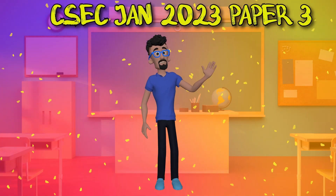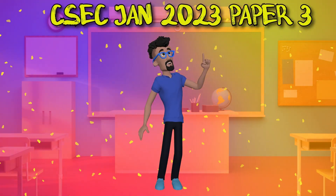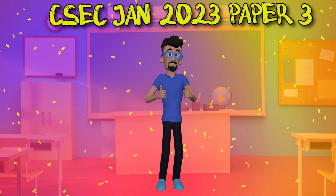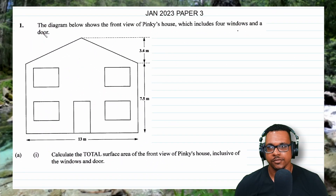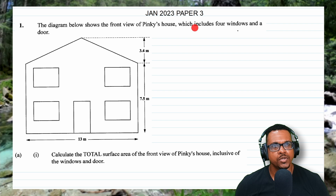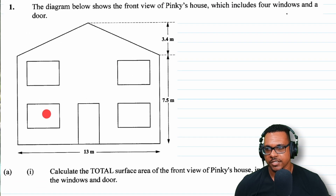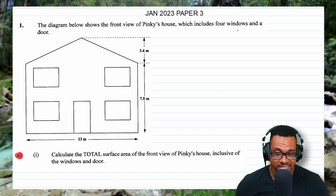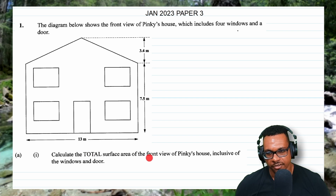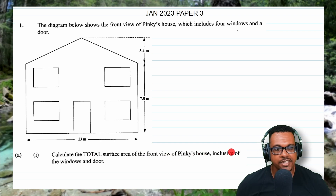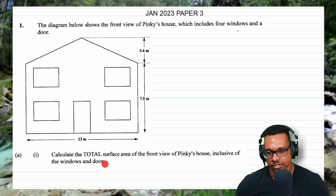In this video we're going to look at the CSEC January 2023 Paper 3. The first question shows the front view of Pinky's house, which includes four windows and a door. Part A part 1 is to calculate the total surface area of the front view of Pinky's house, inclusive of the windows and door.